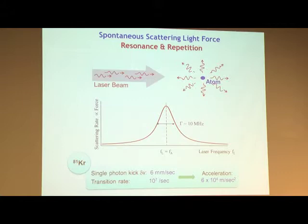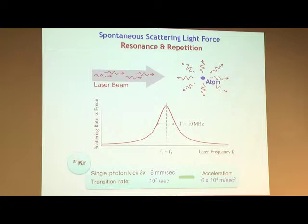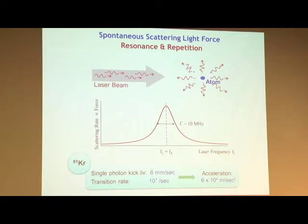The atoms are held inside a vacuum by laser beams. The force comes from scattering of photons — for krypton, each photon kick changes the velocity of the atom by 6 mm/s. Not much, but the transition rate is 10⁷ per second, so the acceleration is about 6×10⁴ — six thousand times gravity. For this force to work, the laser frequency has to be resonant with the atomic transition. The magneto-optical trap naturally incorporates both resonance and repetition, which are exactly what we need for rare isotope detection.